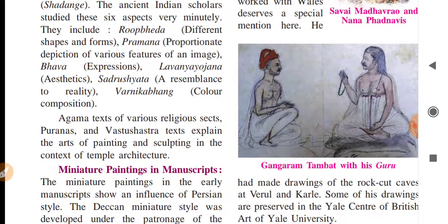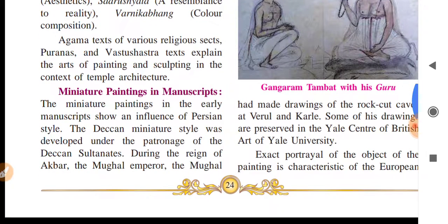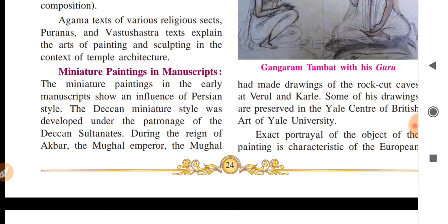Agama texts of various religious sects, Puranas, and Vastushastra texts explain the art of painting and sculpting in the context of temple architecture. Miniature painting in early manuscripts shows an influence of Persian style. Manuscripts are handwritten scripts, and miniature painting means small-model painting.